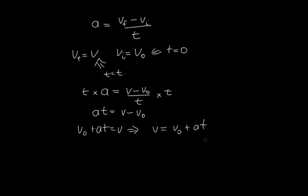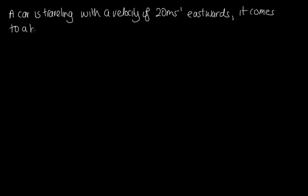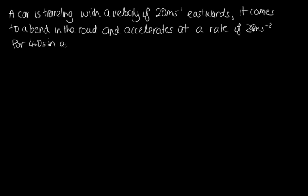Let's have a look at a problem now that we could solve using this equation. So the question is, a car is traveling with a velocity of 20 meters per second eastwards. It comes to a bend in the road and accelerates at a rate of 2.0 meters per second per second for 4.0 seconds in the northerly direction. What is its final velocity?